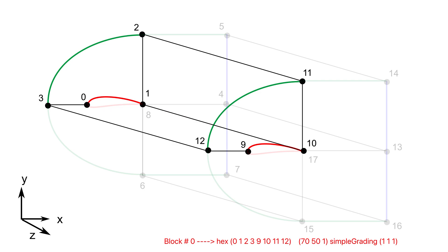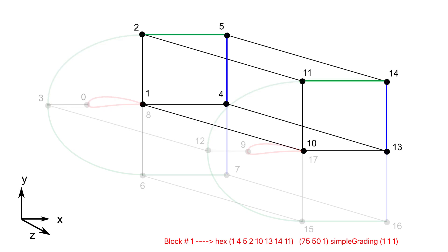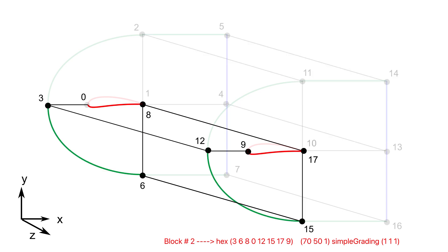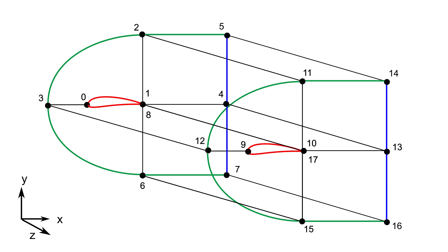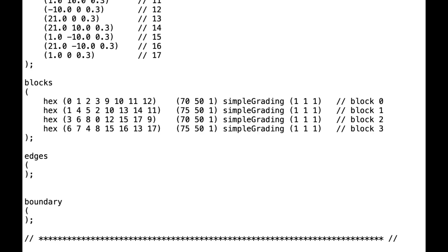For the next blocks, repeat the process for block one with 75 elements in x-direction, 50 elements in y-direction and one element in z-direction using a uniform distribution. Remember this block shares the y-direction distribution with block zero and the x-distribution with block three. Then proceed similarly for block two and block three. After defining all four blocks, write the definition into your blockMeshDict file as follows.